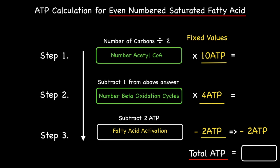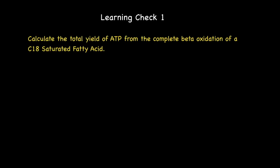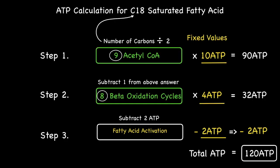Based on this, it's important that you familiarize yourself with the process. Attempt the following questions to see how well you can follow this template. Model answers are included after each question to help with your understanding. Learning check number one: calculate the total yield of ATP from the complete beta-oxidation of a C18 saturated fatty acid. Don't forget to include the steps in your calculation. Pause the video and come back once you have an answer. Here is the model answer to the first learning check.